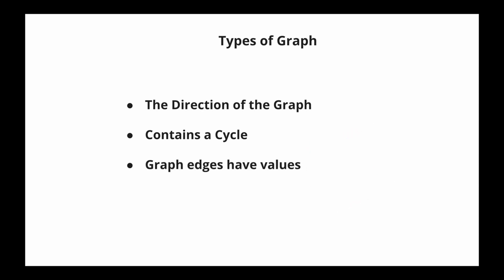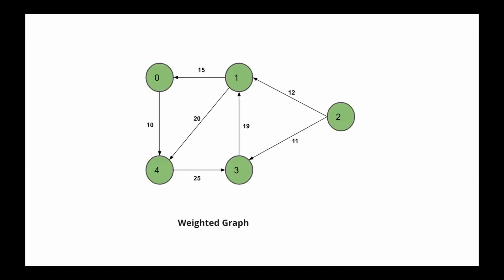The last factor is whether the edges have values. A graph whose edges are assigned values — it can be any value such as a cost, distance, or speed — is called a weighted graph. A graph whose edges have no value is called an unweighted graph.